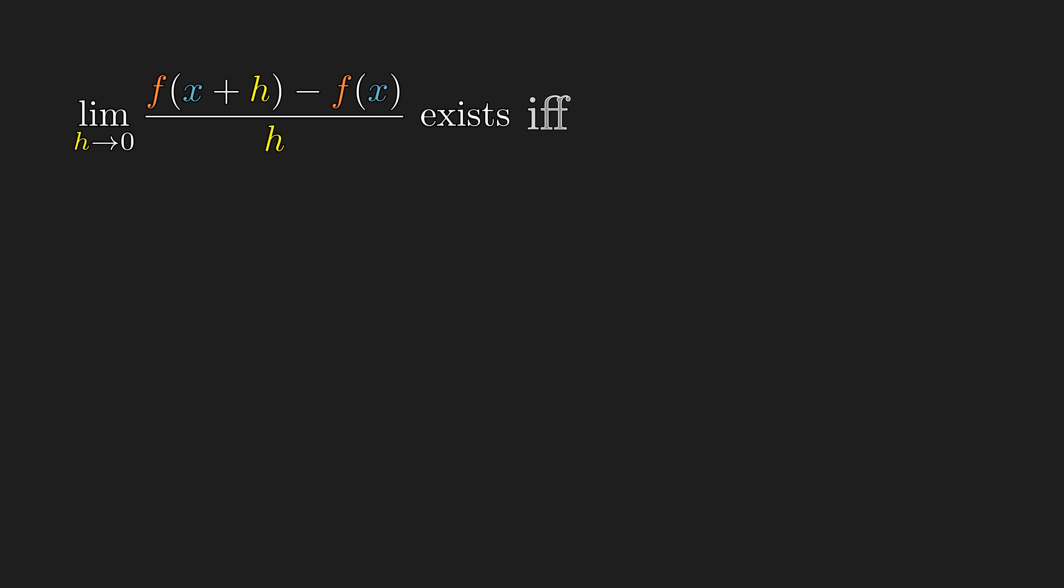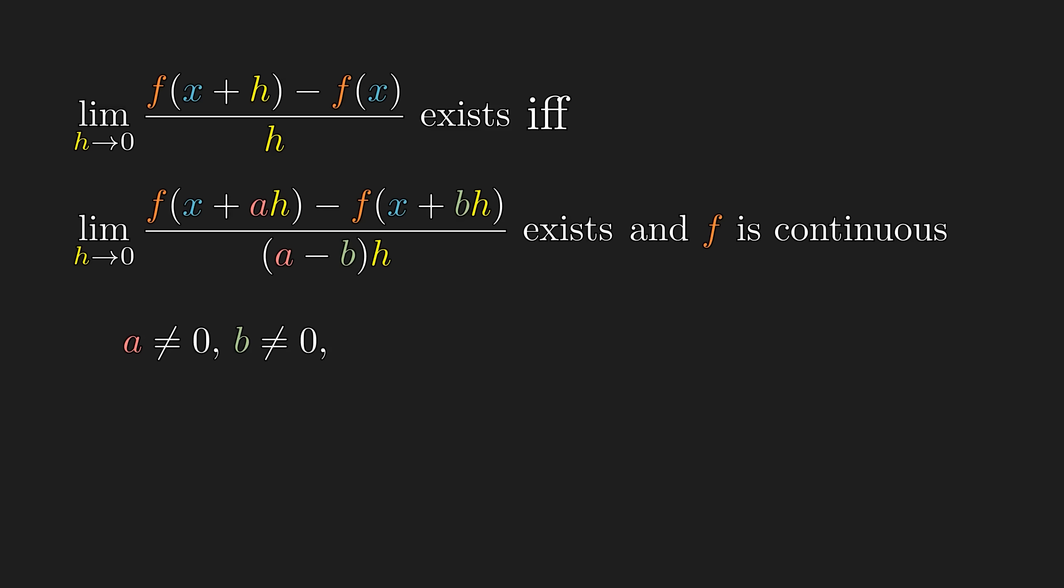Now for the big theorem: a function f is differentiable at x if and only if the limit of an asymmetric divided difference exists and f is also continuous at that point. So if we have continuity, these asymmetric pseudo derivatives are essentially the derivative. Now to be a bit more formal on what a and b are: neither a nor b can be zero, as that would just be the regular derivative. Also, a cannot equal b, because that would make the two endpoints the same, and we can't take the slope of a single point. Lastly, a cannot equal negative b, as that is the symmetric derivative that we want to avoid for now.